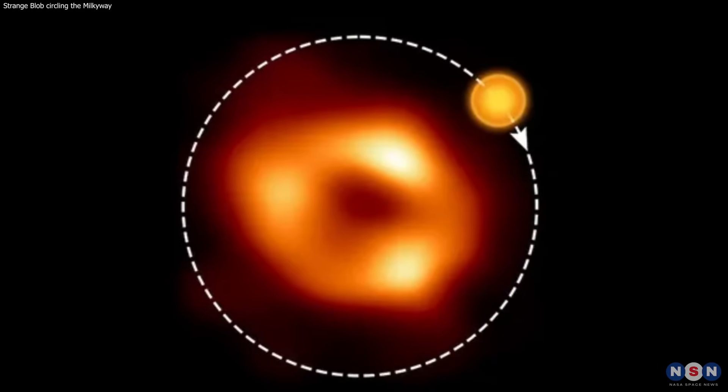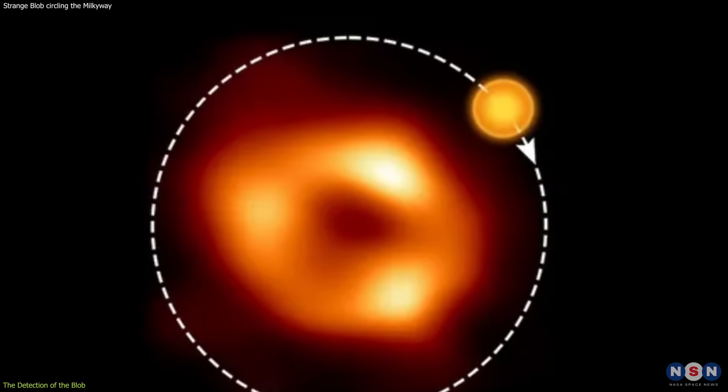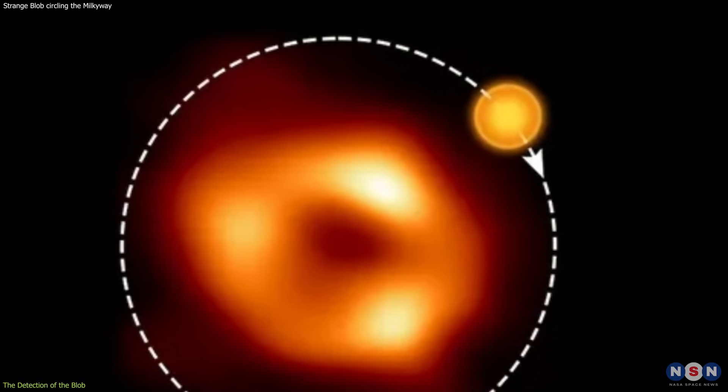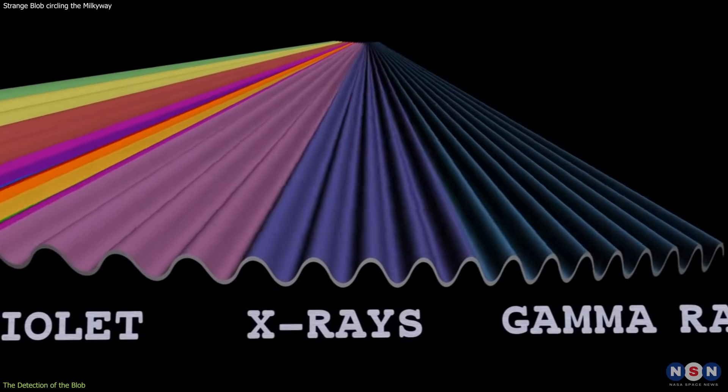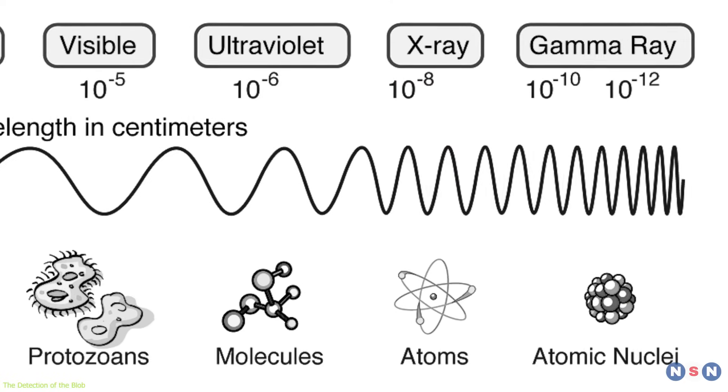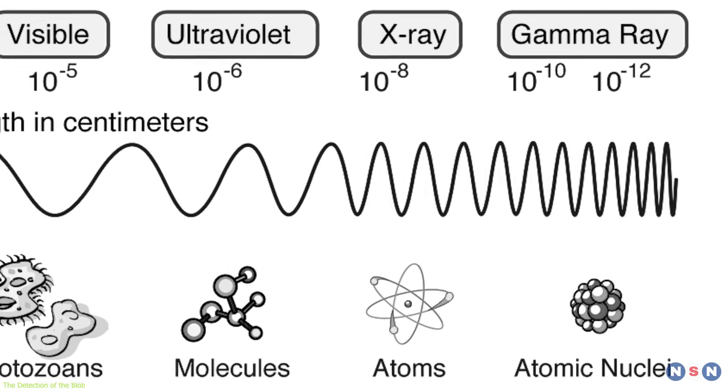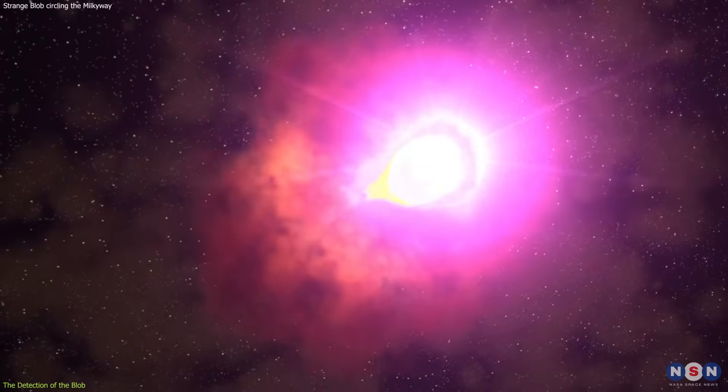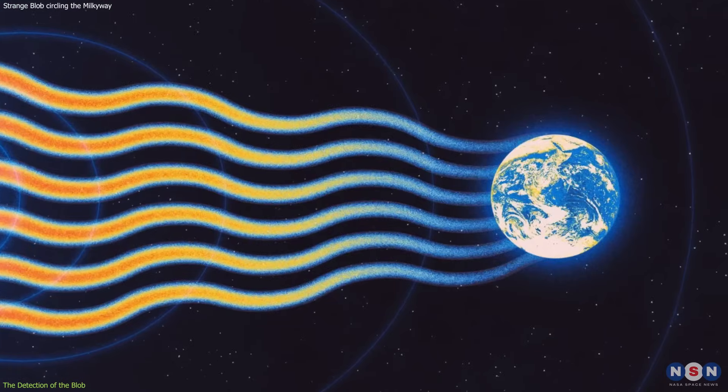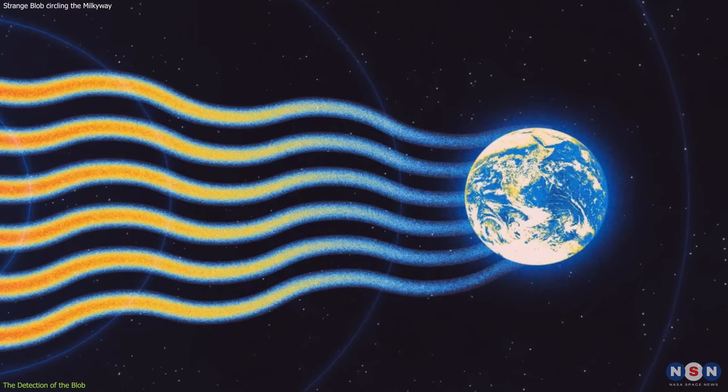The first thing we need to know is how astronomers detected this blob of gas in the first place. The blob is emitting high-energy gamma ray radiation, which is a type of electromagnetic radiation that has the shortest wavelength and the highest energy. Gamma rays are very hard to detect because they are absorbed by the Earth's atmosphere and most materials.